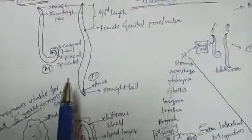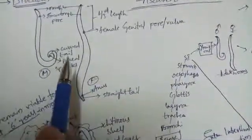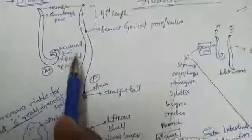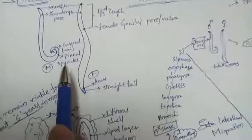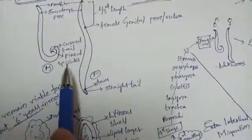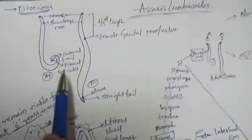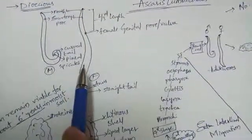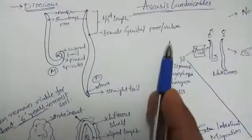Males contain a curved tail and pineal spicules. Pineal spicules are helpful in copulation as they serve to transfer the sperms during copulation.